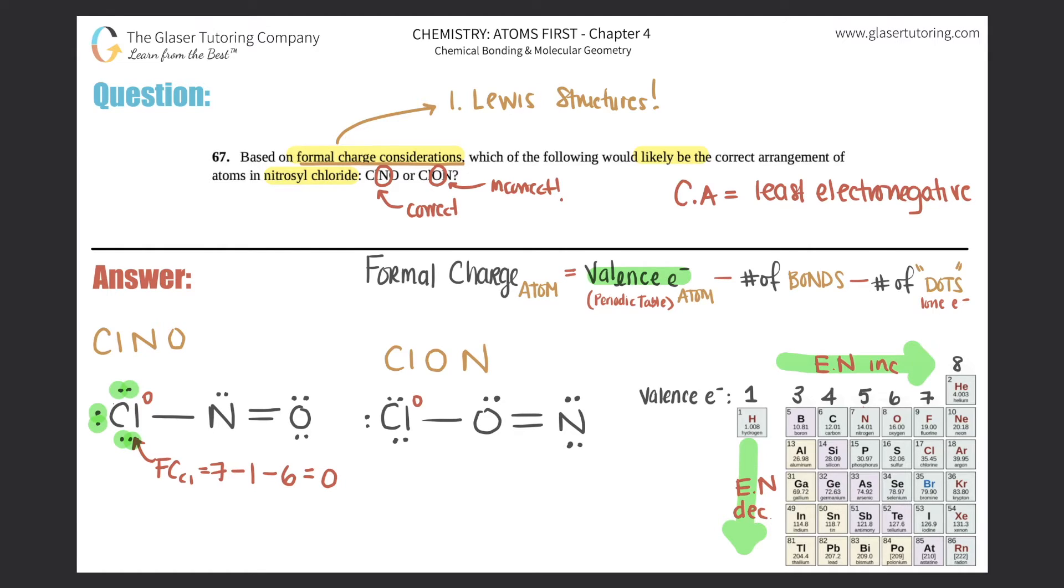But this should go fairly quickly. Formal charge for this nitrogen is valence electrons. Nitrogen is five. It's in group 15. So five minus number of bonds. This nitrogen has three bonds. So minus three minus two dots. So minus two. So this would be a zero. So this is also neutral.